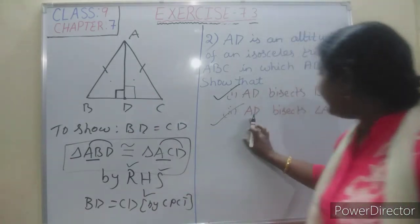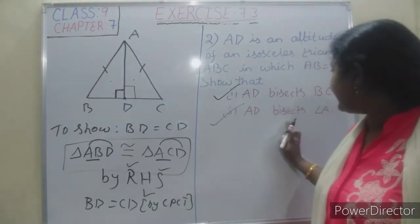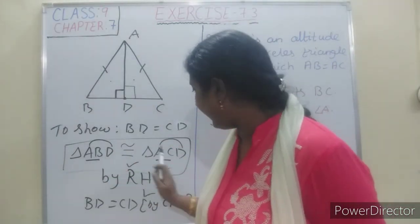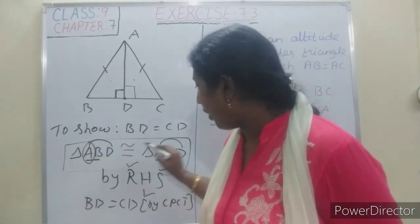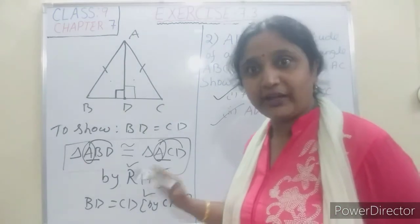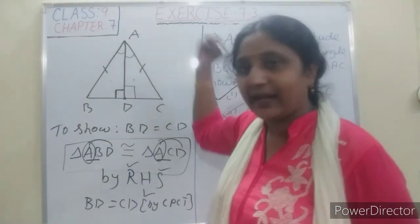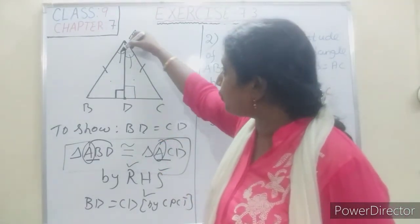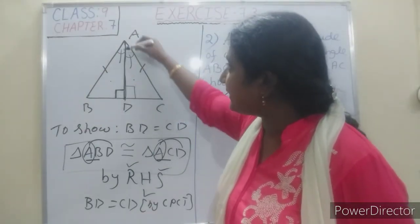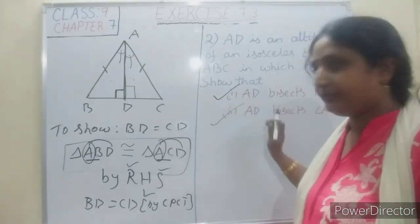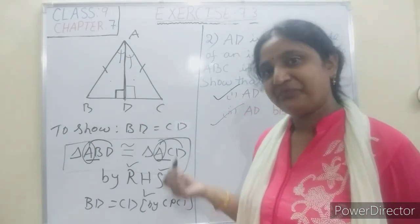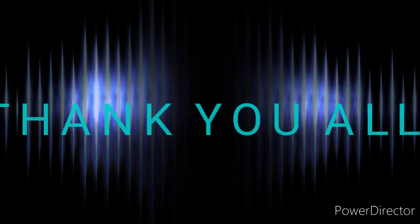For the second part, AD bisects angle A. Since triangle ABD is congruent to triangle ACD, the corresponding angles at A — angle BAD and angle CAD — are equal. When these two angles are equal, the AD line bisects angle A. By CPCT, AD bisects angle A. Second part over. Thank you all.